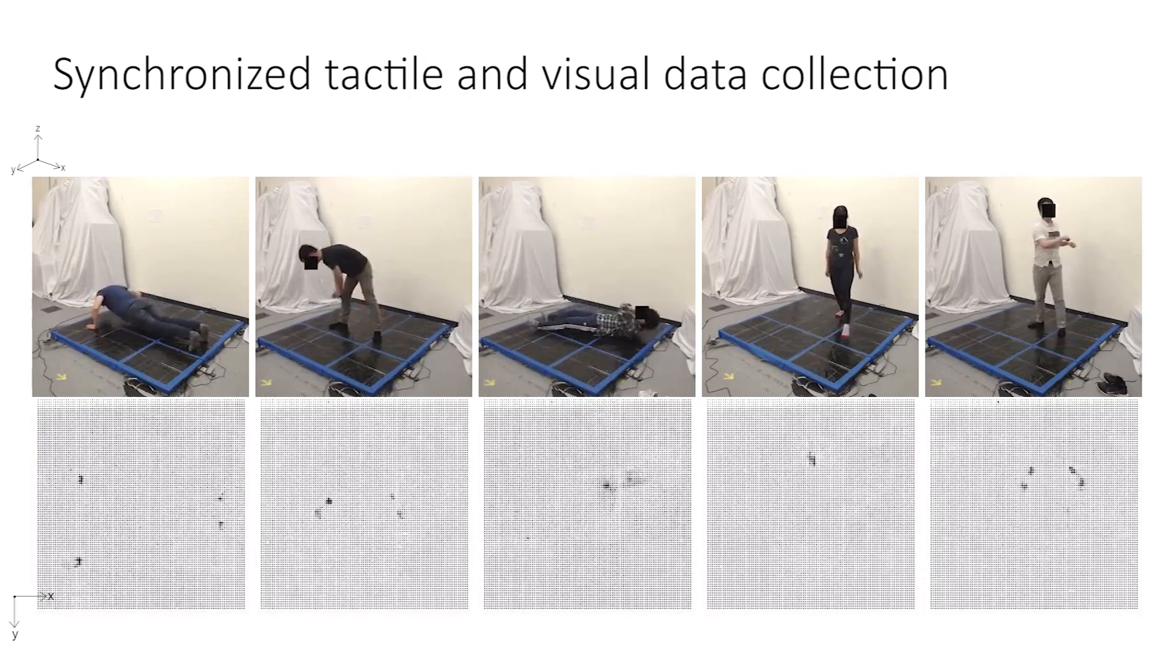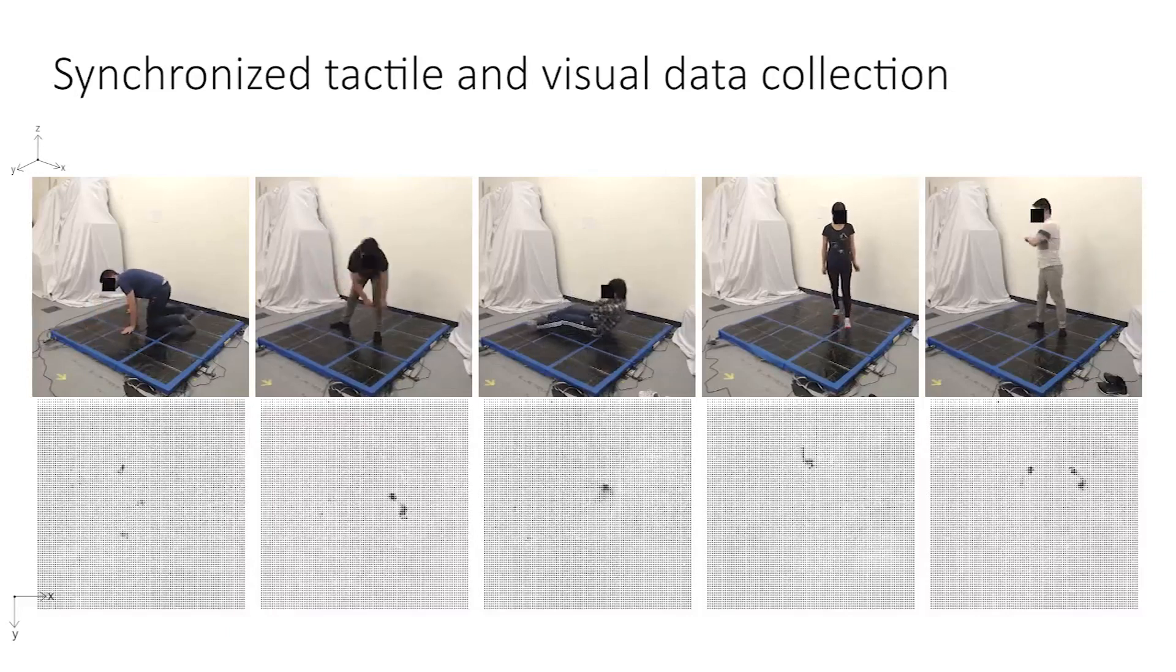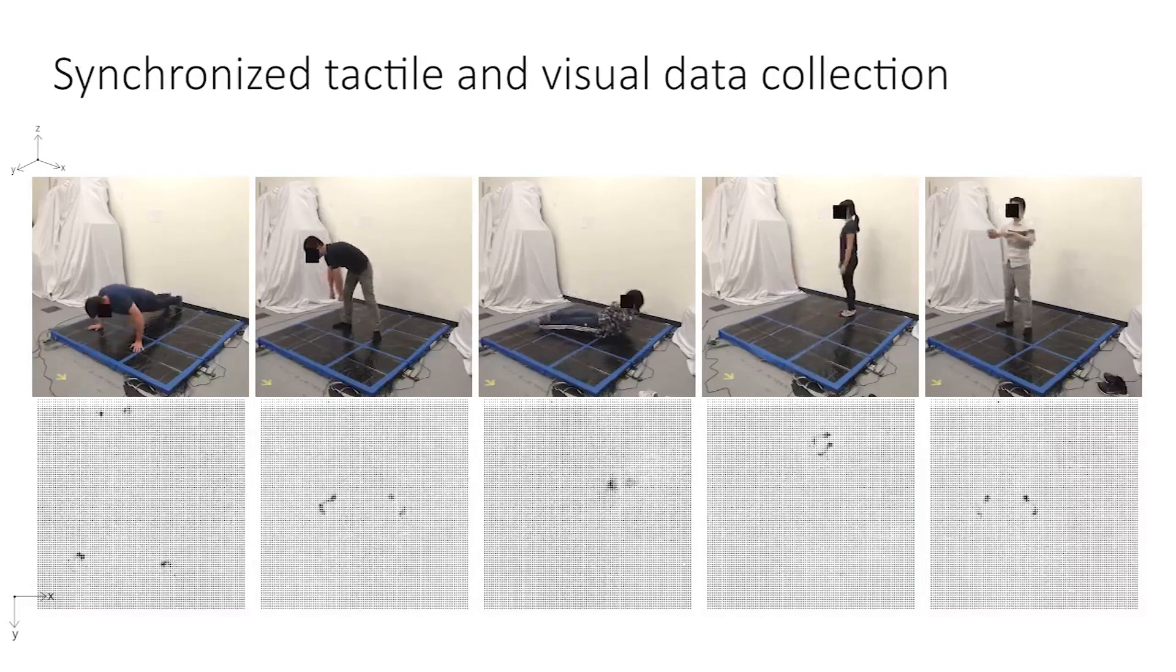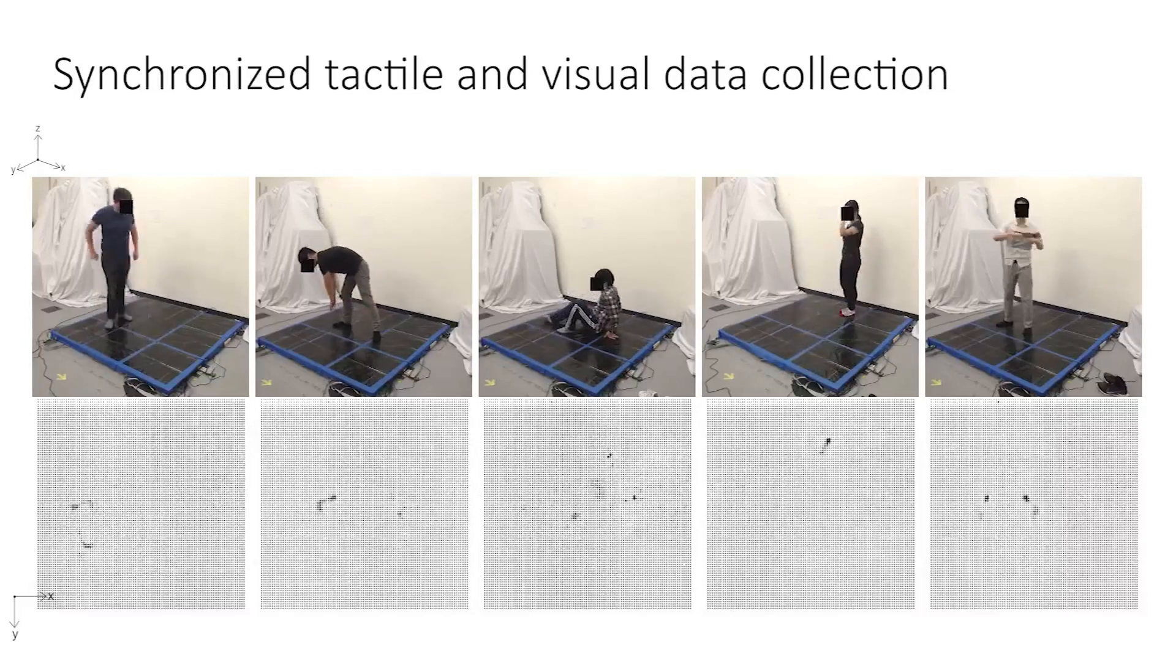We collect over 2 million synchronized tactile and visual frames on 10 different individuals performing a diverse set of daily activities. Due to the spatial correlation between the human skeleton and tactile signal over the floor plane, we are able to perform data augmentation and synthesis by rotating, shifting, and combining the recorded dataset.